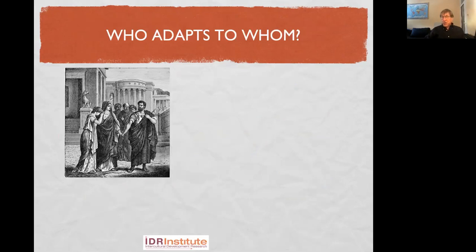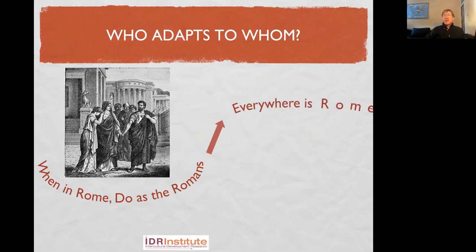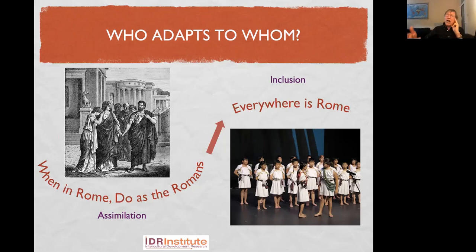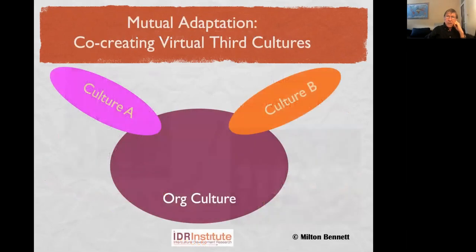This raises the issue of who adapts to whom as we move into multicultural societies. It used to be 'when in Rome, do as the Romans.' These days, everywhere is Rome — I use an image of Japanese kids dressed in togas to illustrate that. The 'when in Rome' idea is the old assimilation notion: whoever the dominant culture was could say you have to do it our way. But as we move into more multicultural situations, it's unclear who gets to say that. So it's more of an inclusive situation where we have to think: how does this work if we're not going to have a dominant culture that can impose itself on everybody else just because it has more money or is willing to fight harder?